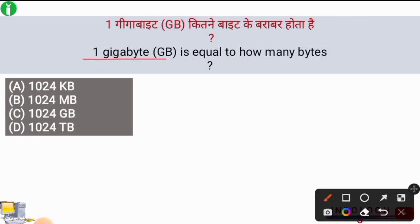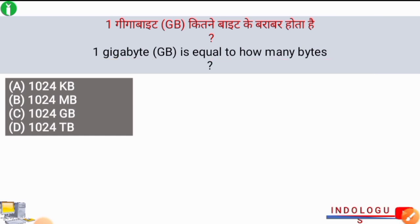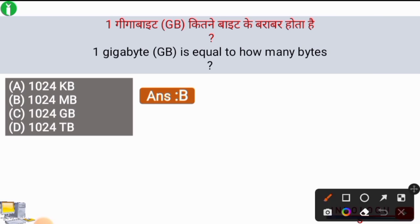Next question: One gigabyte (GB) is equal to how many bytes? The right answer is option B, 1024 MB. So 1024 MB is equal to 1 GB.